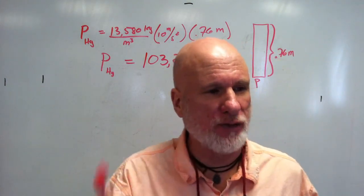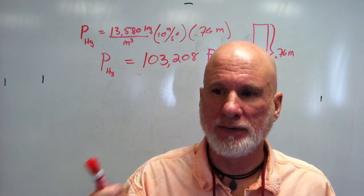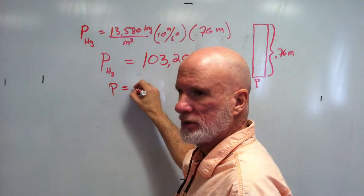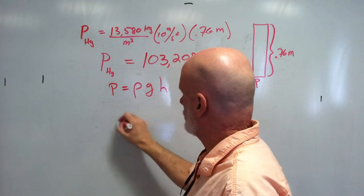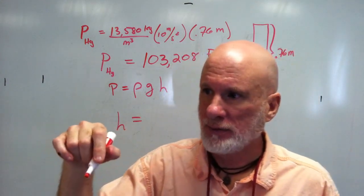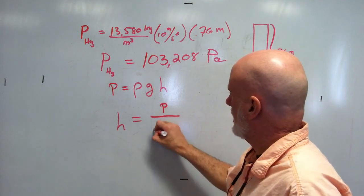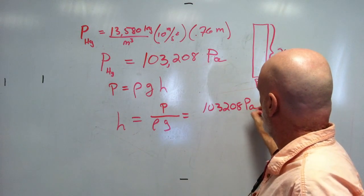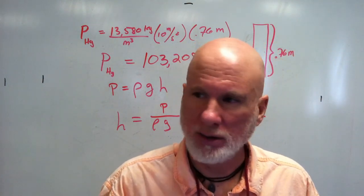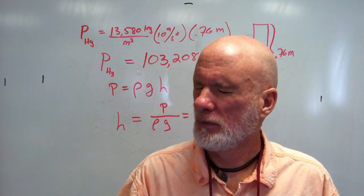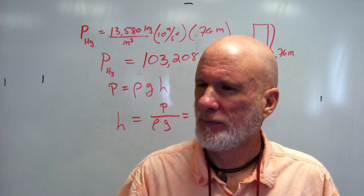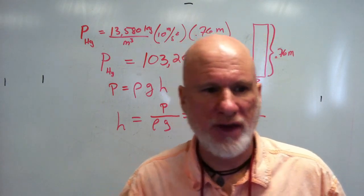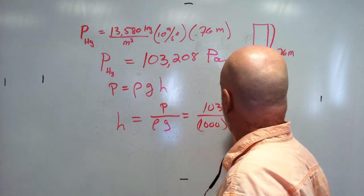Now, how big of a column of water will give you the same pressure? You're solving for H now. We have P = ρgH, so H equals pressure divided by density times g — that's 103,208 pascals over what? We use the density of water, which is 1,000, not mercury, because the column contains water.